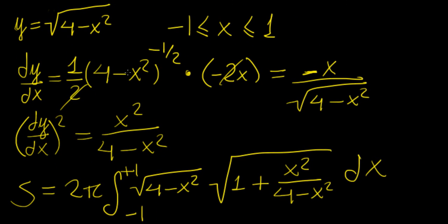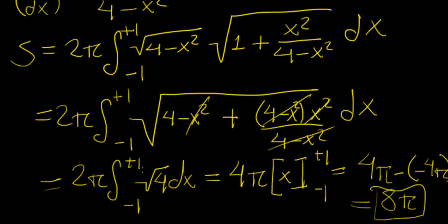So 8π square units is the surface area of that function when rotated about the x-axis between minus 1 and 1. These formulas and derivations show how integrals can be applied in entirely new ways. In future videos, we'll look at more applications of integration — not just to geometry but to practical real-world problems — and in the next video, we'll apply both integration and differentiation to kinematics of particles, treating rates of change to find functions relating velocity, acceleration, and displacement.